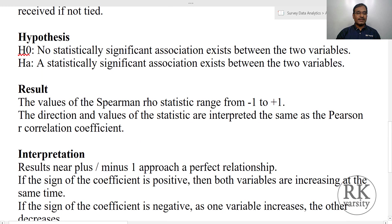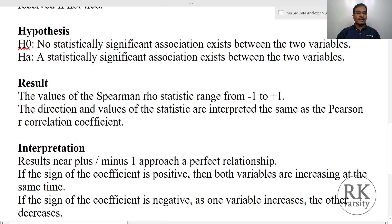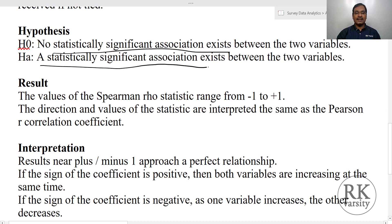In a Spearman's rank correlation, the hypothesis we make is: the null hypothesis states that no statistically significant association exists between two variables, and the alternative hypothesis states that a statistically significant association exists between the two variables.